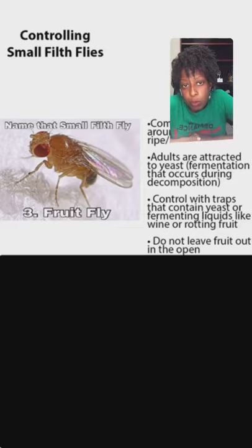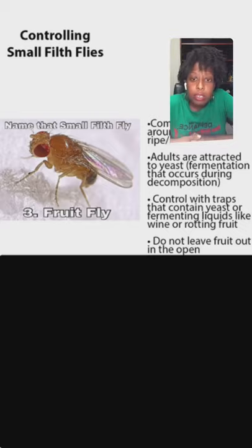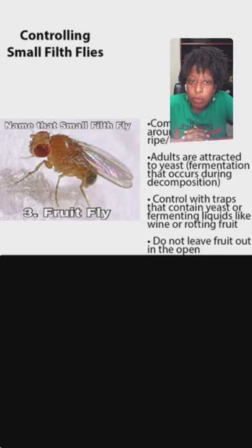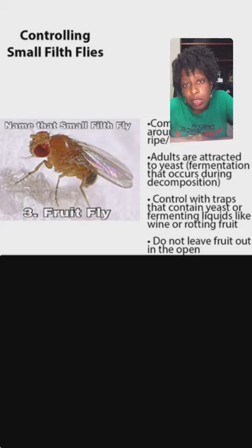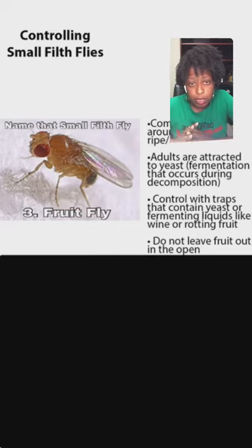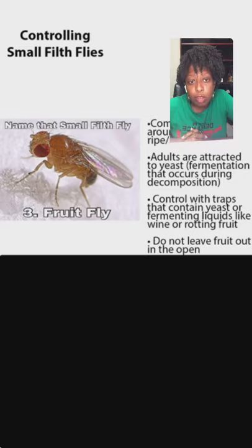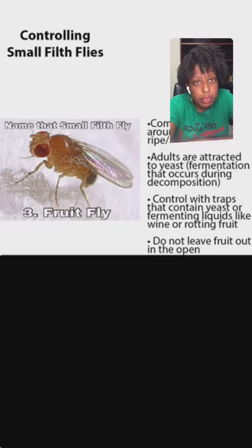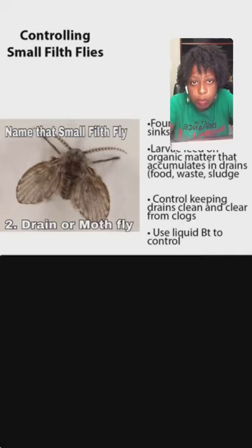Fruit flies will lay their eggs in the peel of bananas. You'll take the bananas home, those eggs will hatch, and you'll have an infestation. Fruit flies are mostly found around fruit — they're not really attracted to garbage unless it contains rotting fruit. Cover your fruit, keep it in the refrigerator, or freeze it, especially if it's getting close to being overly ripe.